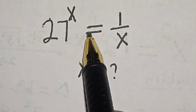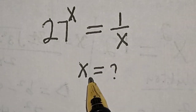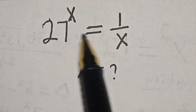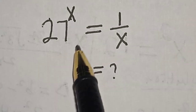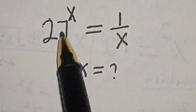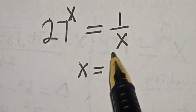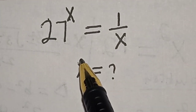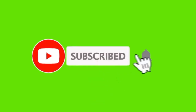27 raised to power x is equal to 1 divided by x. Hi everyone, welcome to my class. In this class we want to find the value of x from this given equation: 27 raised to power x is equal to 1 divided by x. We're going to apply a special trick here. But before we proceed, please don't forget to like, share, comment and subscribe. Thank you. Solution.